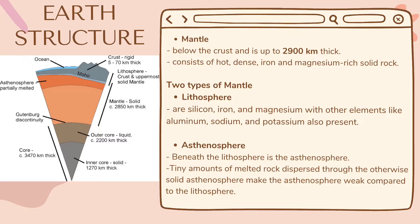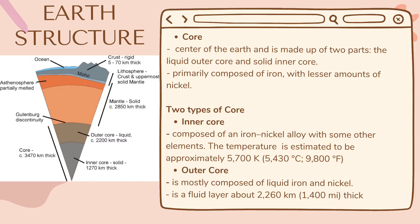There are two types of mantle. The lithosphere consists of silicon, iron, and magnesium with other elements like aluminum, sodium, and potassium also present. The lithosphere constitutes the hard and rigid outer vertical layer of the earth, and includes the crust and the uppermost mantle. Beneath the lithosphere is the asthenosphere. Tiny amounts of melted rock seep through the otherwise solid asthenosphere, making the asthenosphere weak compared to the lithosphere.